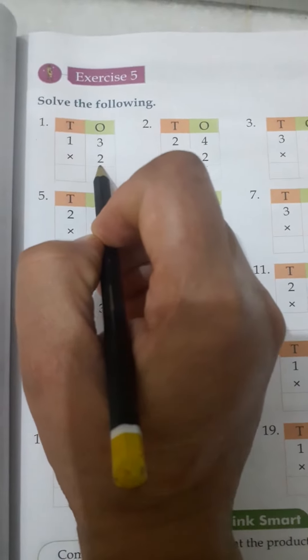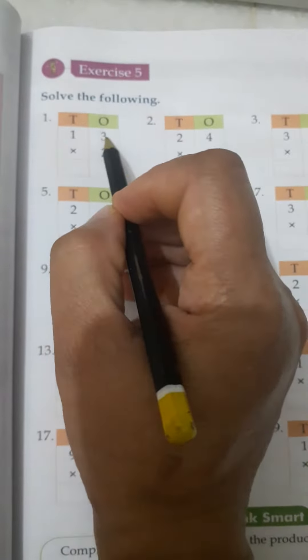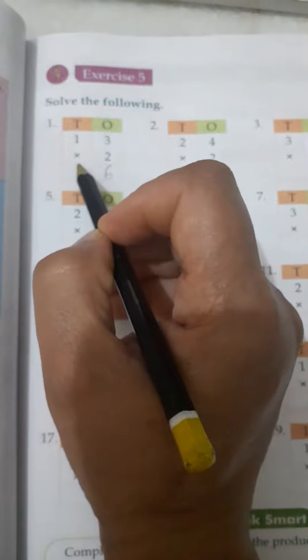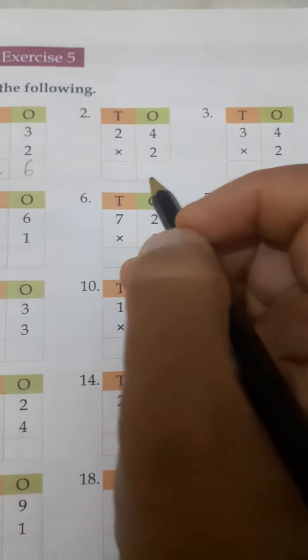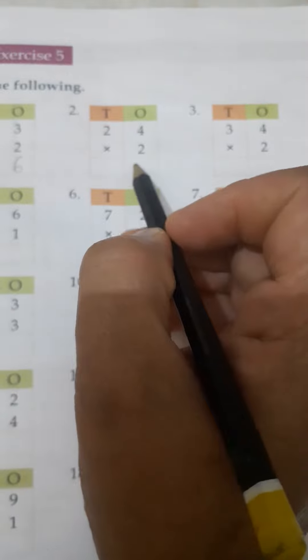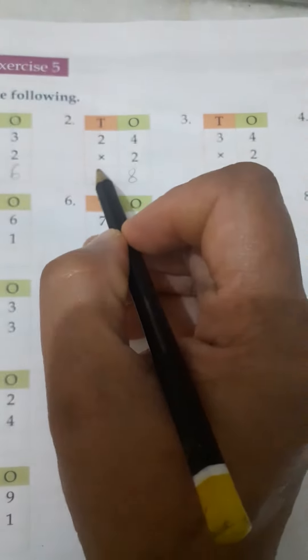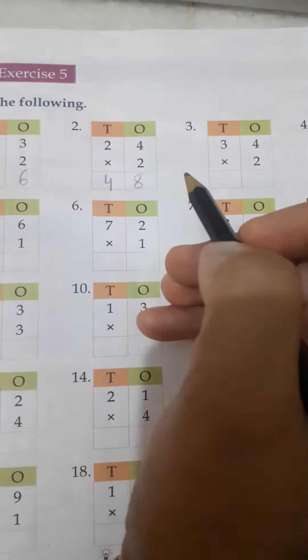First one is 13 multiply by 2. 2 threes are 6 and 2 ones are 2. Is that clear? Now move on to the second one. 2 fours are 8 and 2 twos are 4. It's 48.